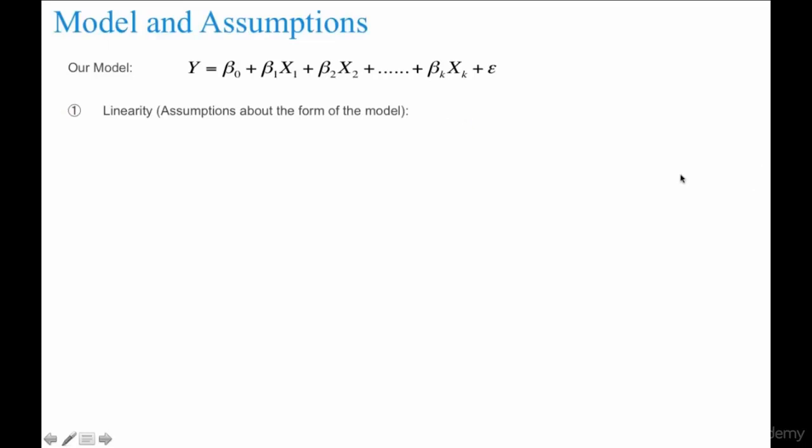Another point that you need to bear in mind is there should be linearity in parameters. For example, you can also build an equation like this: Y equals beta 0 plus beta 1 x1 plus beta 2 x2 squared. You can have this kind of an equation also. That's acceptable.